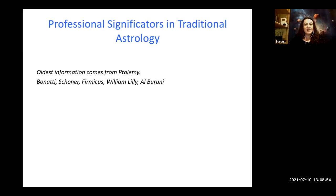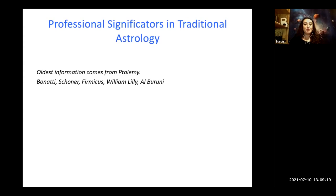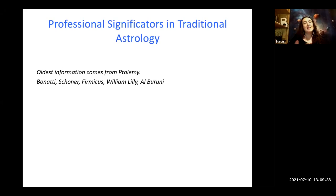Nowadays, when it comes to identifying the profession for a client or for a chart that we work on, most of us look directly to the MC and its ruler. Additionally, we may look into any planets that aspect the MC. But ancient astrologers followed a different path, and they had a lot of rules. So how can we identify the professional significators in a chart using a traditional perspective? We will discuss these methods briefly, then move on to Mercury, Venus, and Mars as significators.